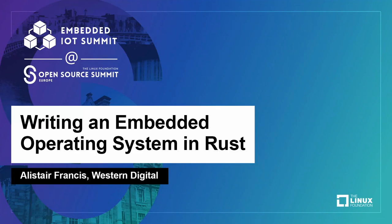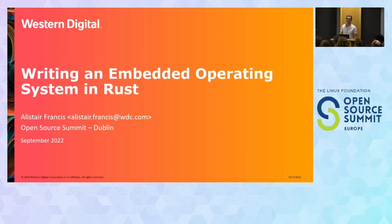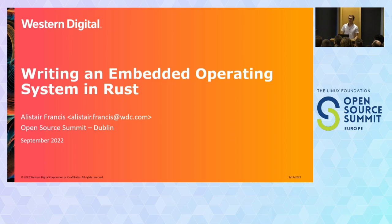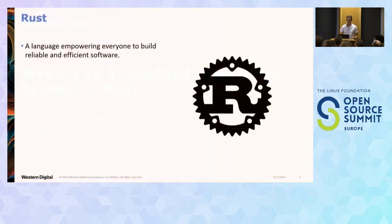Hello everyone. I'm impressed there are this many people here at the last session of the week — you're all more diligent than I am. My name is Alistair and I'm here to talk about writing an embedded operating system in Rust. I work at Western Digital Research and I've been working with Rust specifically in embedded for a few years now. I really love Rust, so there's not a lot of bad stuff to talk about.